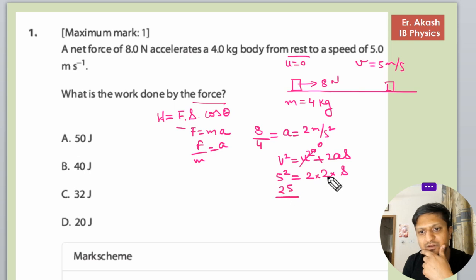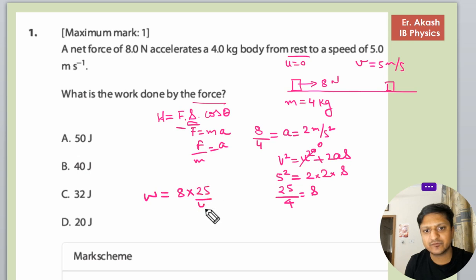The final velocity is 5 squared, initial velocity is 0, and 2 into 2 into s. So this is 25 and this is 4, so s equals 25 by 4. The work is equals to the force, which is 8 Newton, into s which is 25 by 4, into cos theta.